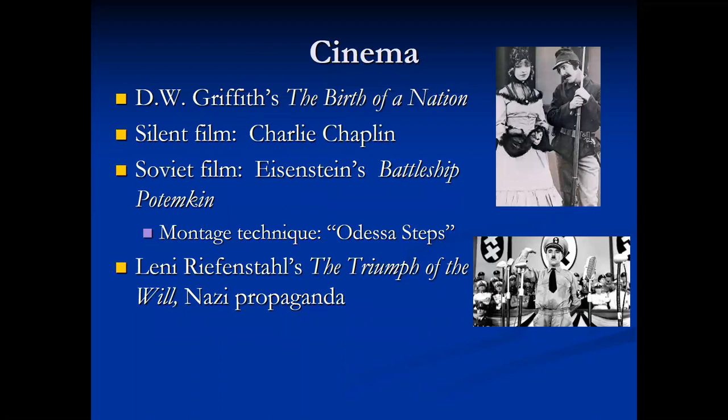In the early 20th century, a new genre of cinema was born. Movies were black and white and silent until the late 1920s. Early notable or notorious films were D.W. Griffith's The Birth of a Nation, a tale of the KKK that was screened in Woodrow Wilson's White House; the silent films of Charlie Chaplin including the satire The Great Dictator; and the Soviet film by Eisenstein Battleship Potemkin with its innovative montage technique. Cinema served as entertainment but was also used as a form of Nazi propaganda in Leni Riefenstahl's Triumph of the Will.